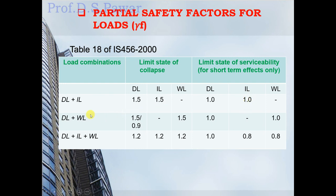For the combination of dead load plus wind load or earthquake load, the partial safety factor for dead load is 1.5 or 0.9. The 0.9 value is used when checking sliding and overturning, such as in dams and retaining walls. The partial safety factor for wind load in the limit state of collapse is 1.5, and 1.0 in the limit state of serviceability. For the combination of dead load, imposed load, and wind or earthquake load, the partial safety factor for the limit state of collapse is 1.2 for all three, and for serviceability, it is 1.0 for dead load and 0.8 for imposed load and wind load.